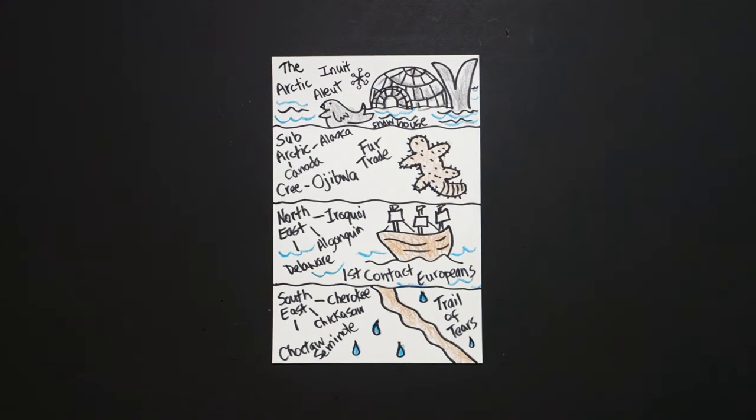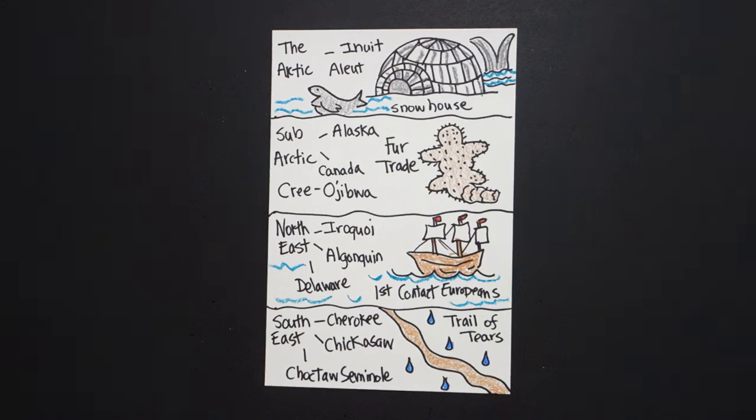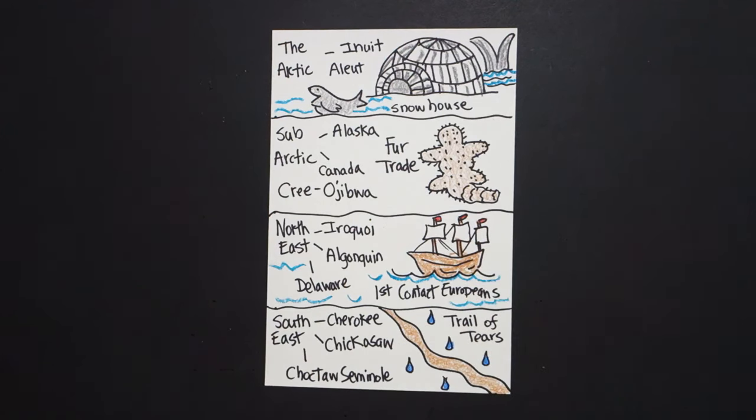Okay let's see what this looks like. I'll color it in. Okay here is part one of my geographic spaces for my different Native American tribes. Don't forget to add a little bit of red up here on your first contact Europeans. Okay bye bye.